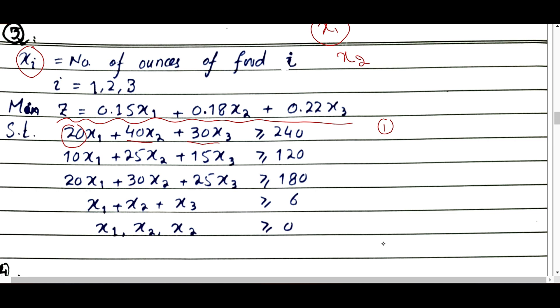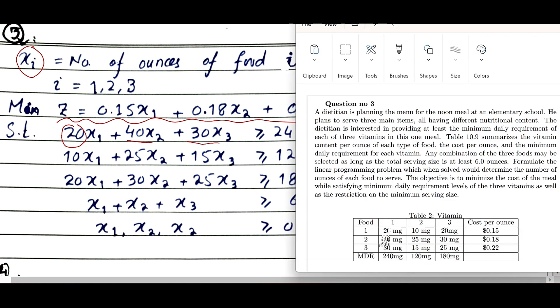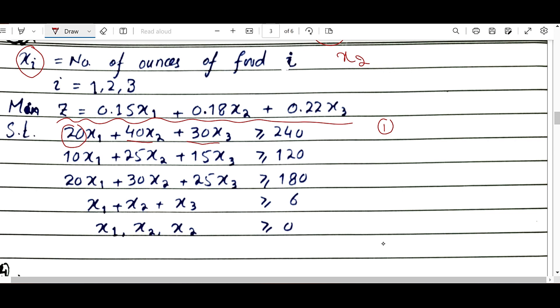Minimum daily requirement means that these three together should be 240 or it can be more than that, because minimum means it should be at least this much, but it can be more. So 20x1 + 40x2 + 30x3 ≥ 240.